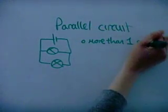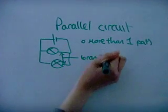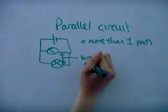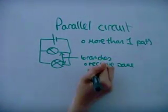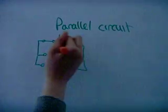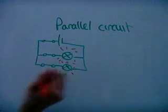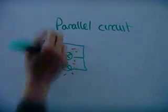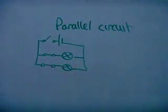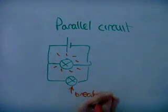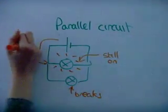In a parallel circuit, there is more than one path for the current to flow, and each branch receives the same voltage. The placement of the switches controls one branch or all of the branches. If one component on a branch breaks, the others are not affected.